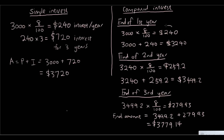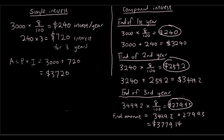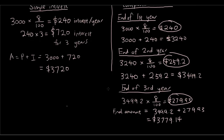You can also see that the interest every year is increasing as a result of increasing the principal. The interest in the first year was $240, interest in the second year is $259, and the interest in the third year is even higher. So every year the interest is increasing, which is a good thing when you are saving money.